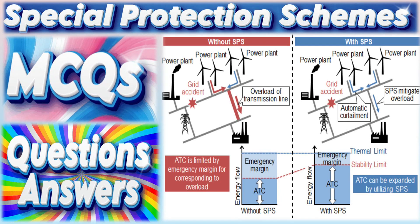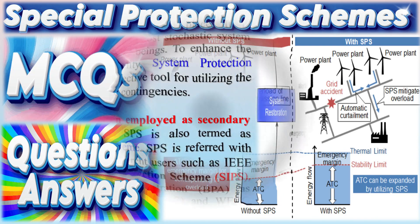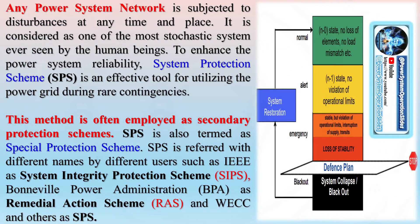Any power system network is subjected to disturbances at any time and place. It is considered one of the most stochastic systems ever seen by human beings. To enhance power system reliability, System Protection Scheme (SPS) is an effective tool for utilizing the power grid during rare contingencies. This method is often employed as secondary protection schemes. SPS is also termed as Special Protection Scheme.